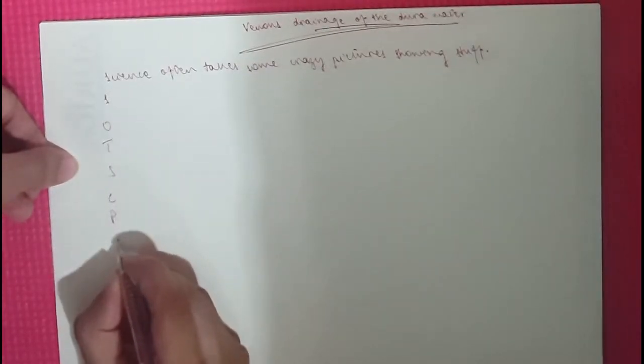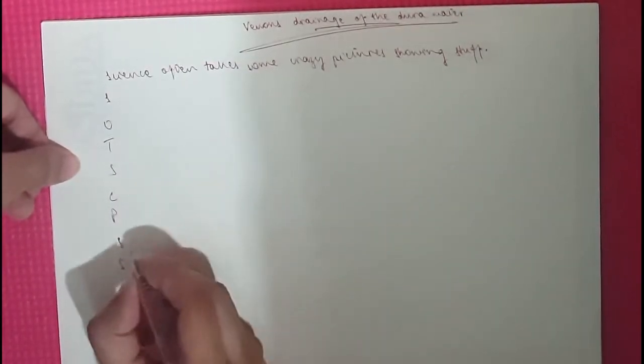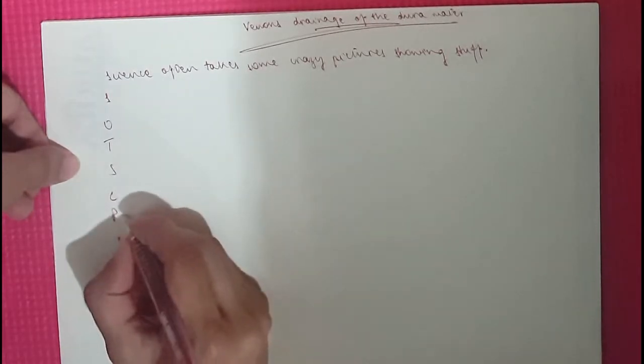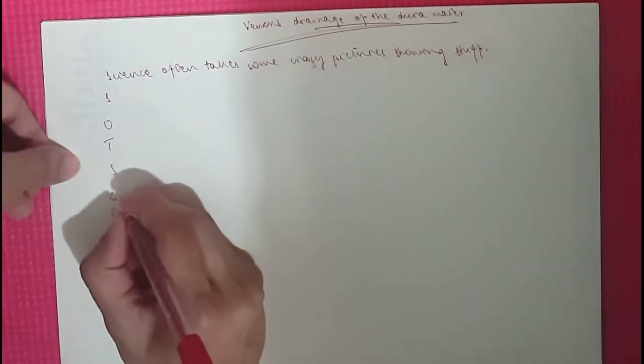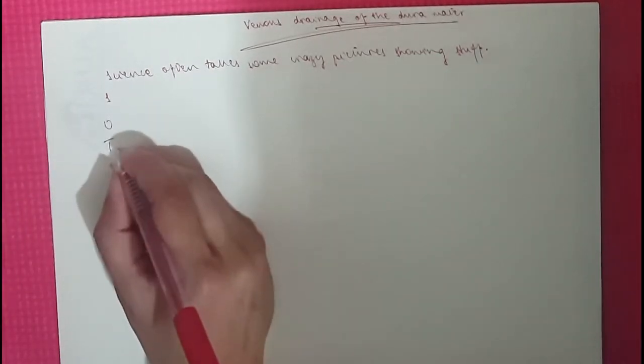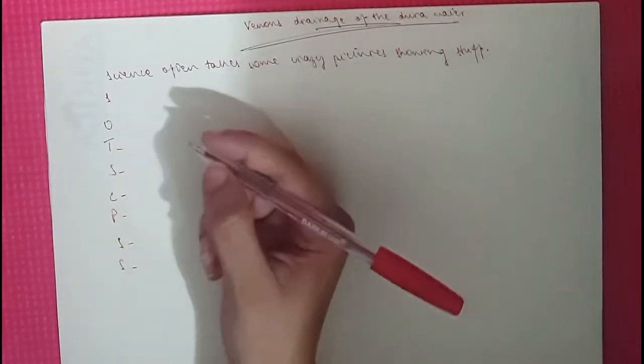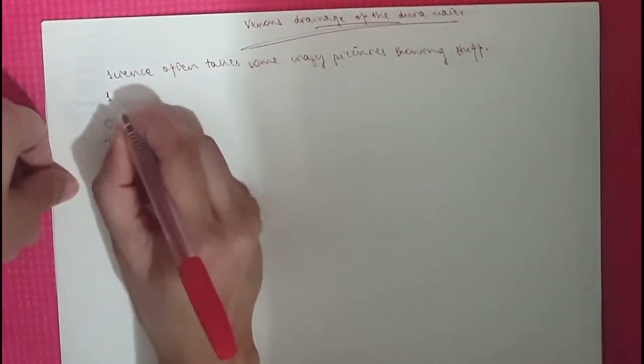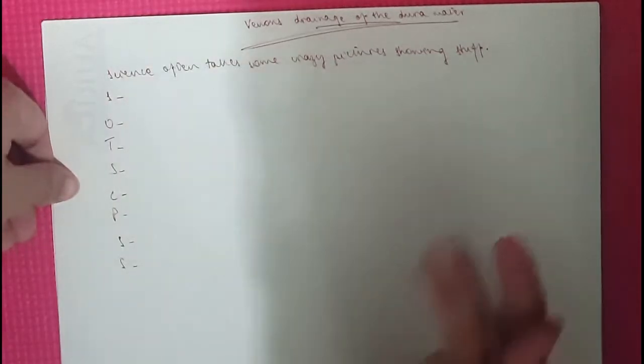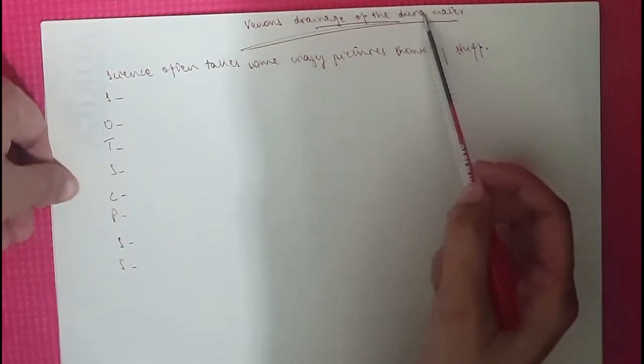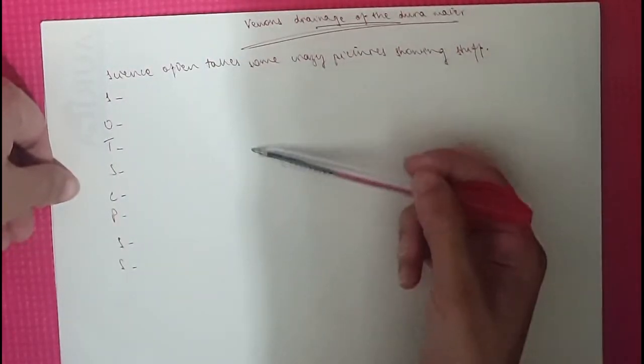So we'll write the letters down and then name the sinuses. Now what you need to know is that the veins of the brain drain into superficial venous plexuses and the dural sinuses. So the dural venous sinuses are valveless channels and they're located between two layers of the dura mater. Most of the venous blood ultimately drains into the internal jugular veins, so they're very important. Now let's name the sinuses.